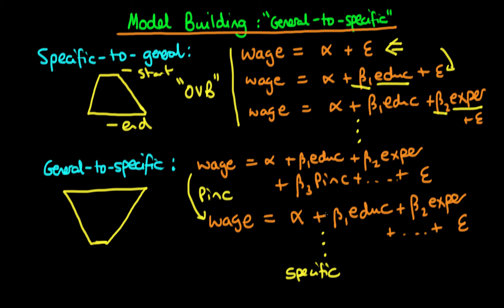So why is the general-to-specific approach better than the specific-to-general approach? By starting with a model that contains all of the important covariates, you don't leave yourself open to omitted variable bias to the same extent as when you start with a very specific model. When you delete variables from the regression, you can do so with greater confidence than in the specific-to-general case, where you weren't sure whether you were adding or removing variables in line with their true relationship with wage. General-to-specific modelling is therefore a way of avoiding omitted variable bias.